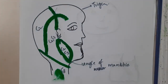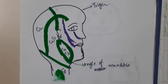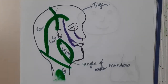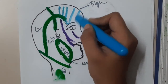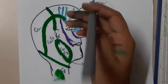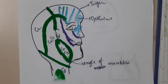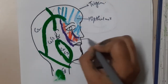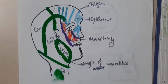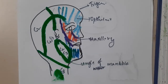The trigeminal nerve area is divided into three parts: upper, middle, and lower. The upper one third of the face is supplied by the ophthalmic nerve, the middle one third is supplied by the maxillary nerve, and the lower one third is supplied by the mandibular nerve.